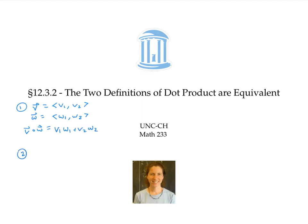The second definition is given in terms of the length of the two vectors and the angle between them. The dot product V dot W is equal to the length of V times the length of W times cosine of the angle between them.